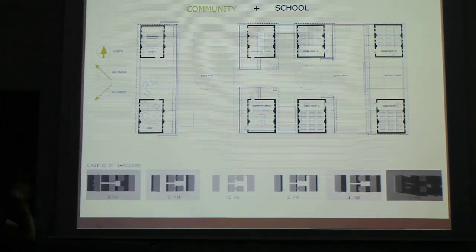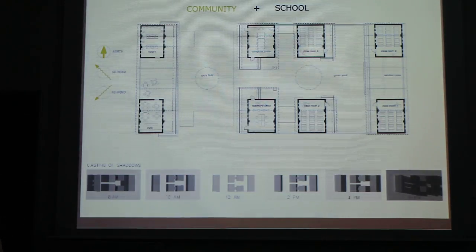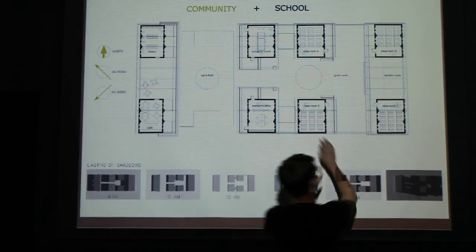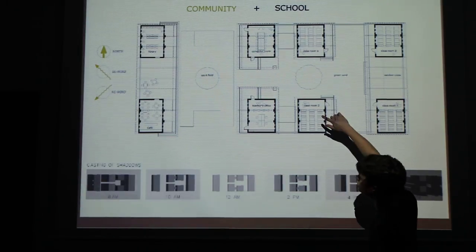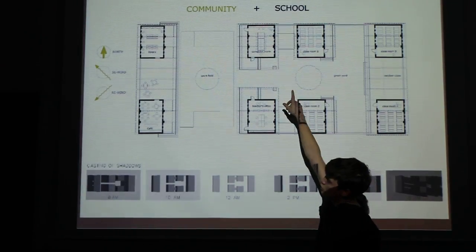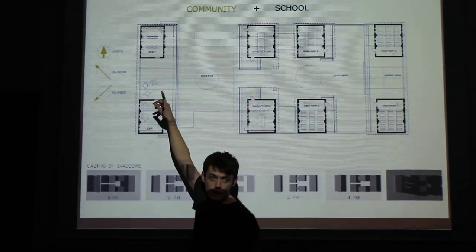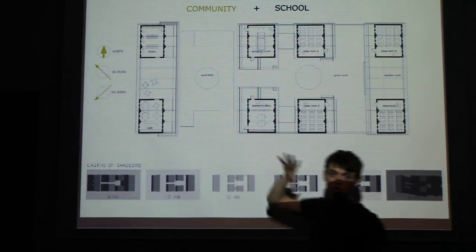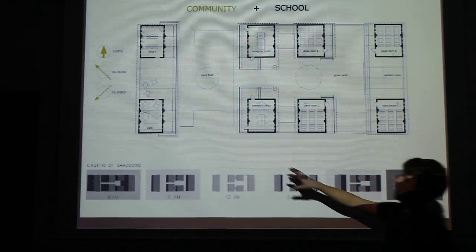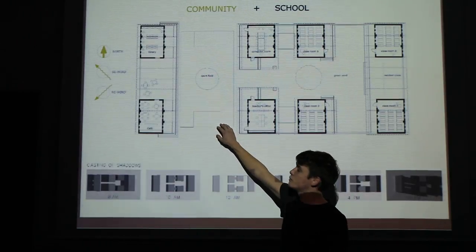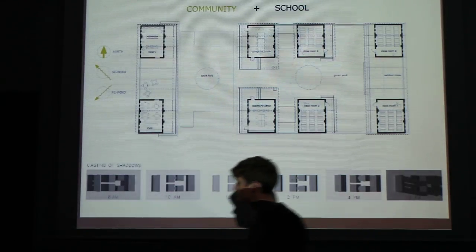This is the model of our school. What we wanted to do is combine the school facilities: we have four classrooms, one room for teachers, a computer room, a cafeteria, and a library. We also wanted to combine it with a sports field that can be used by the whole community around the camp.